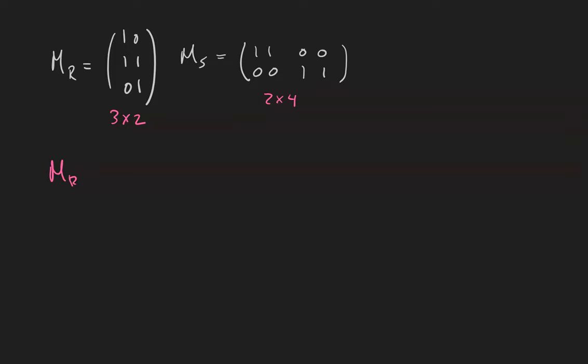Their product, which exists, is going to be the 3 by 4 matrix, which we can calculate to be [1, 1, 0, 0; 1, 1, 1, 1; 0, 0, 1, 1]. If you need to, go ahead and pause the video to make sure you agree with that product.